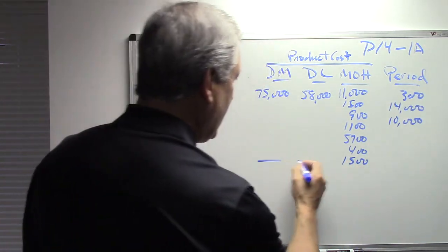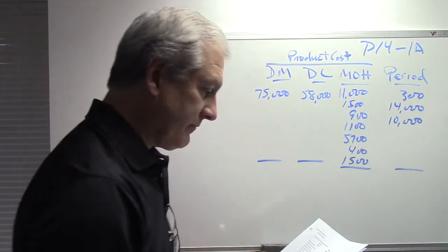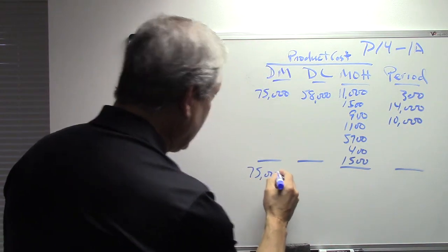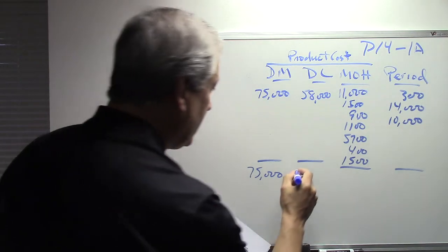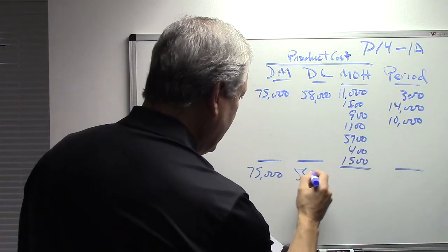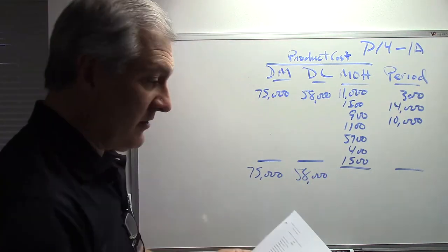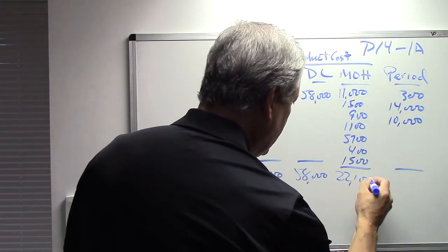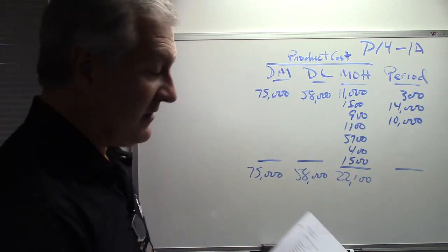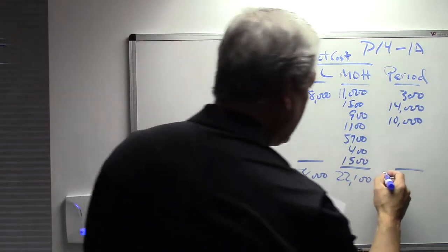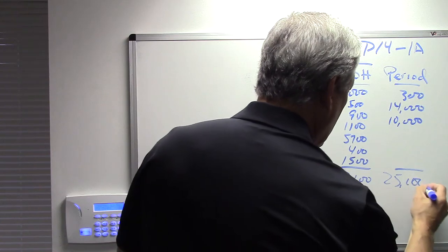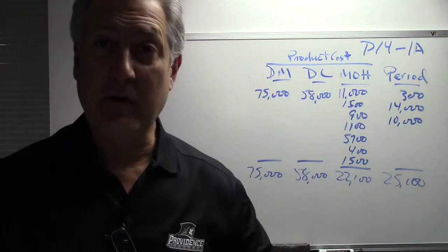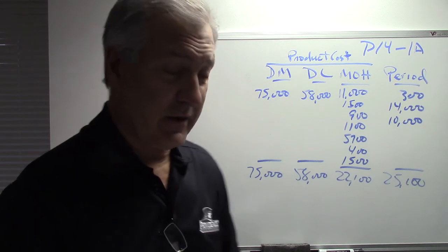They've asked us to total these up. We have $75,000 in direct materials, $58,000 in direct labor, $22,100 in manufacturing overhead, and $25,100 in period costs — non-manufacturing costs.